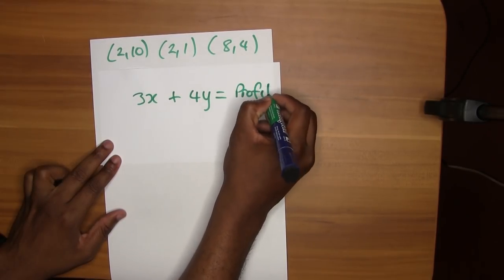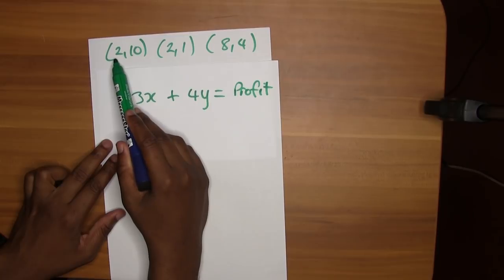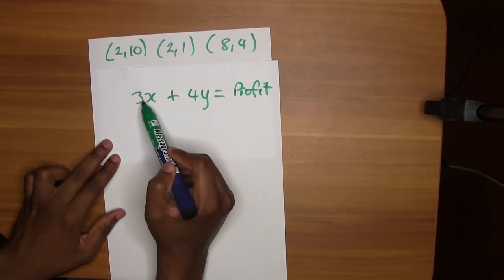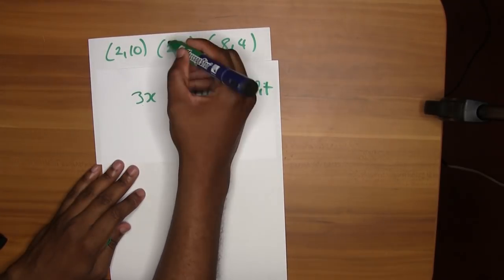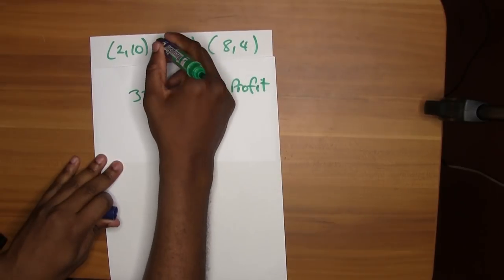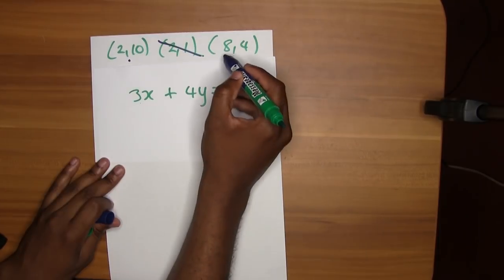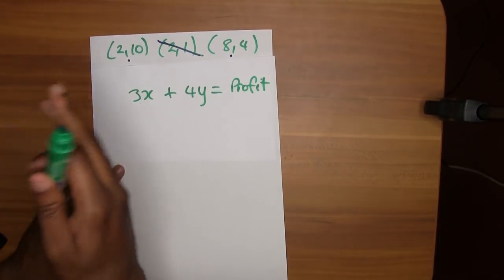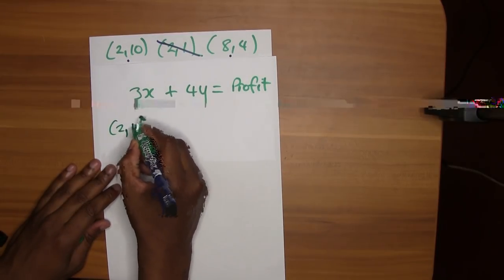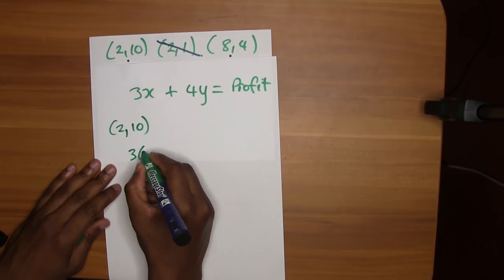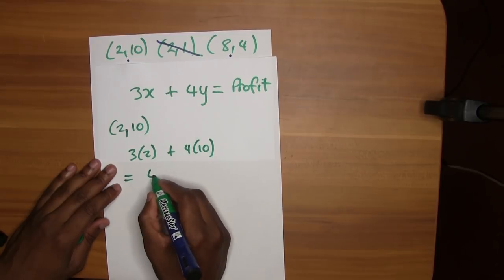Watch what happens here. Every time you're going to take these values and substitute it into this equation and see which one will generate the most profit. I can already see that this is out, those numbers are just too small. That's the point on the lower end of the graph. But these two we're not too sure about, so let's just substitute it in and see. For 2, 10, let's see, three by two plus four by ten, that is equal to 46.